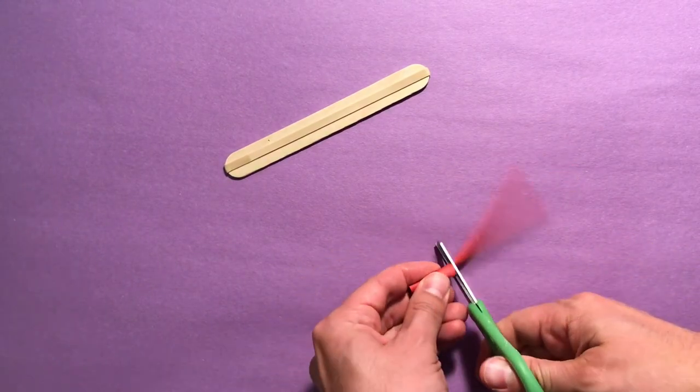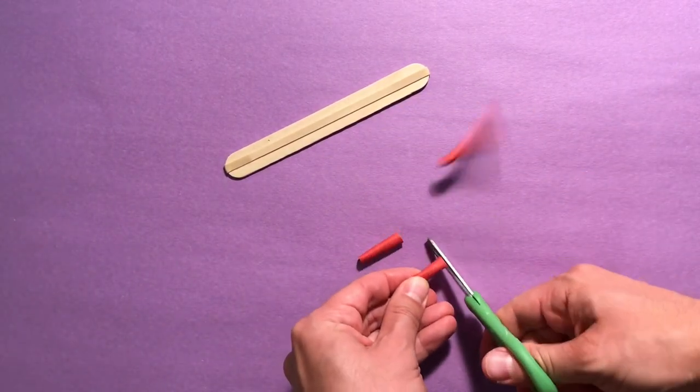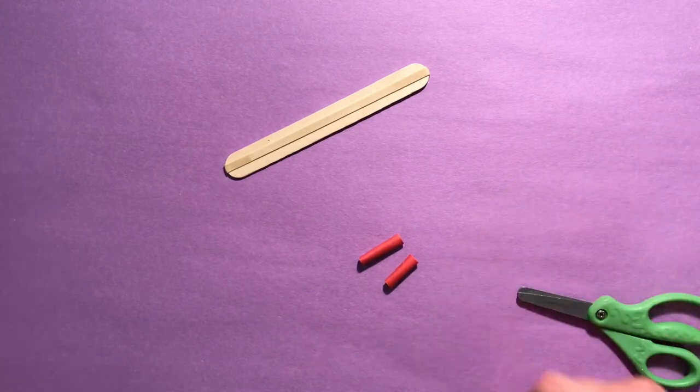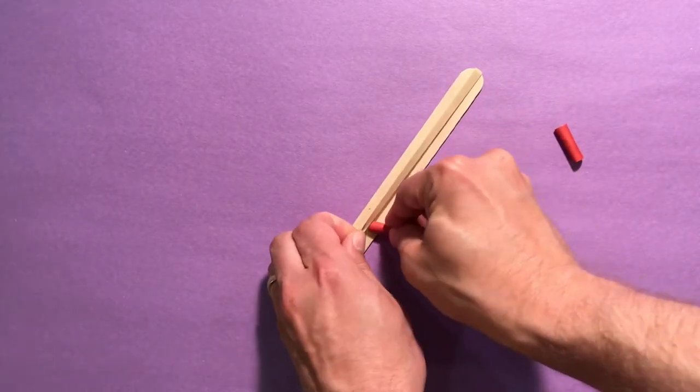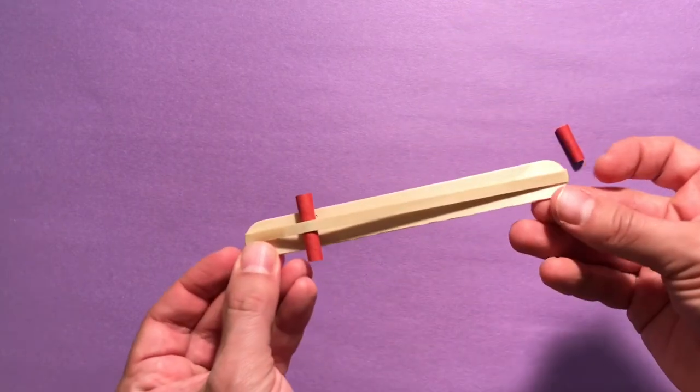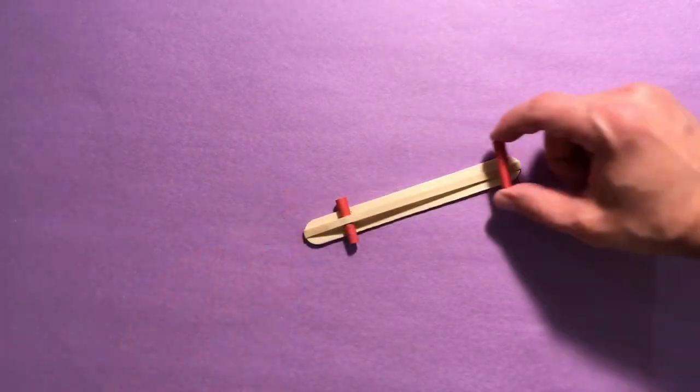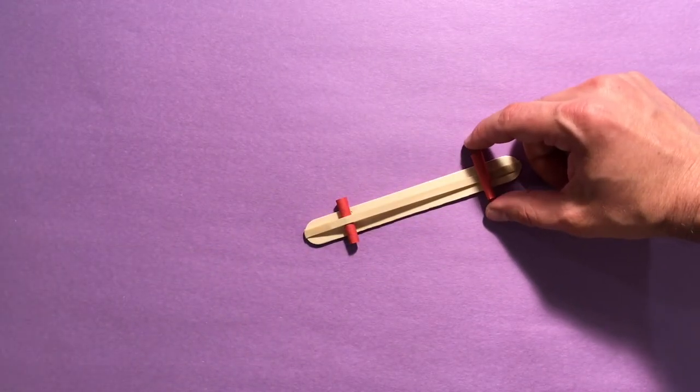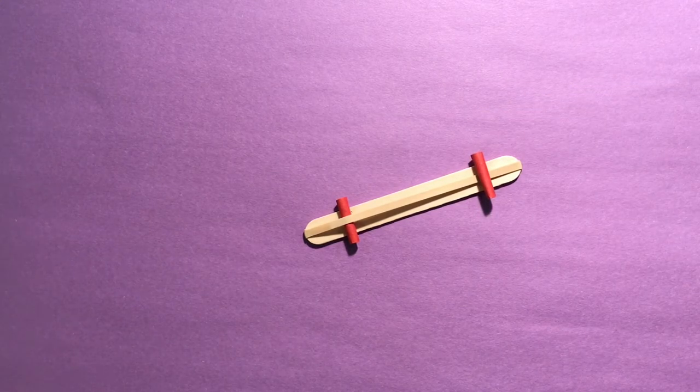Next, you're going to cut two small pieces of straw, each about one to one and a half inches in length. Put one of the small straw pieces under the wide rubber band, about a third of the way up from one of the ends of the stick. Put the other piece of straw on top of the rubber band about a third of the way from the other end of the stick. Make sure it lays on top.